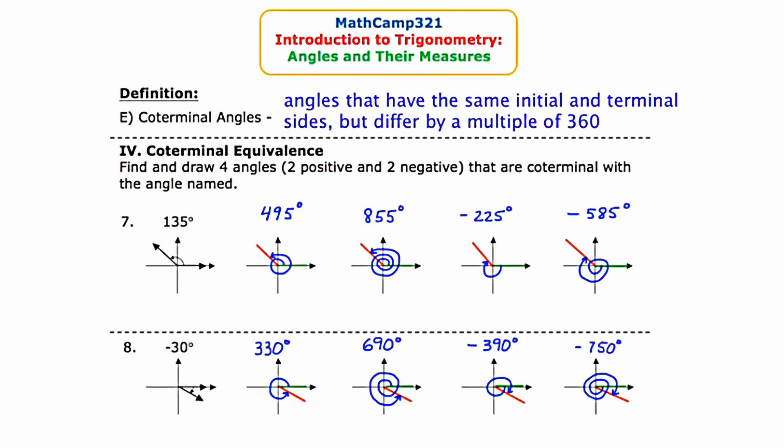So on this slide, we talked about angles that are coterminally equivalent. They have the same initial and terminal sides, but their angle measures differ by some multiple of 360.